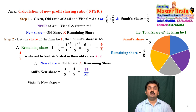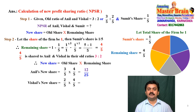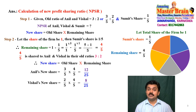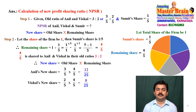In the same way, Vishal's new share equals his old share of 2/5 multiplied by the remaining share of 4/5. That is 5 × 5 = 25 in the denominator, and 2 × 4 = 8 in the numerator. Therefore, Vishal's new share is 8/25.